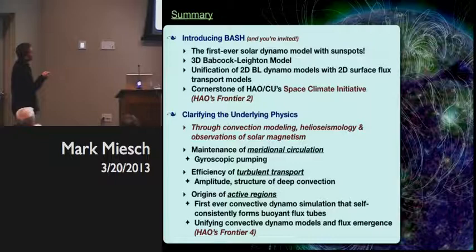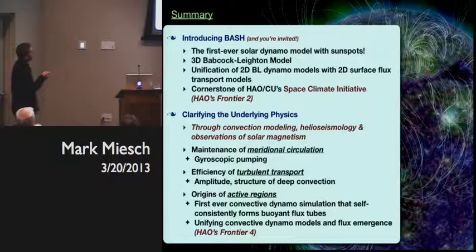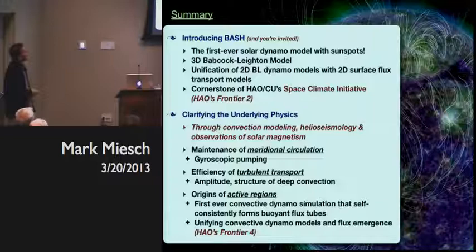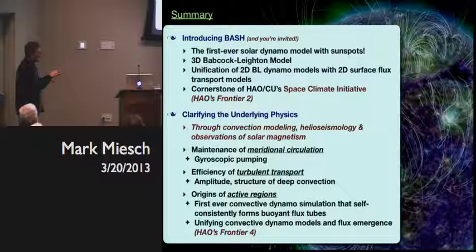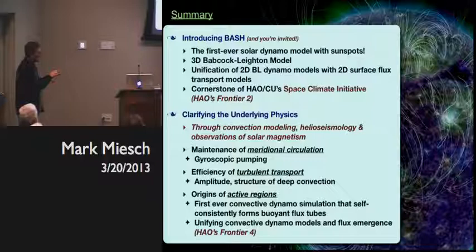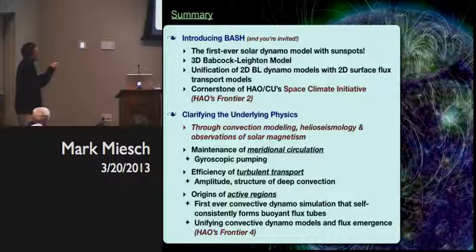Everybody's invited to the BASH. This is a group effort and part of the Space Climate Initiative — we want to address not only the dynamo, but its coupling to the corona, the heliosphere, and irradiance. This is the first ever solar dynamo model with sunspots — a 3D Babcock-Leighton model that unifies Babcock-Leighton dynamo models with 2D surface flux transport models. To support this effort, we're going both above the sun with the Space Climate Initiative, and below the surface with complementary modeling, helioseismic, and theoretical efforts to understand the circulation, turbulent transport, and where sunspots come from.